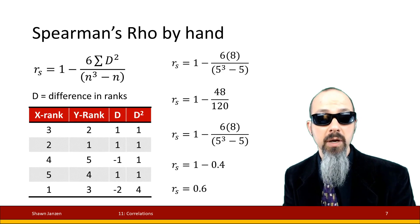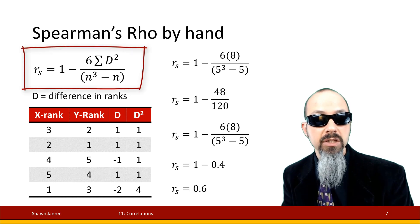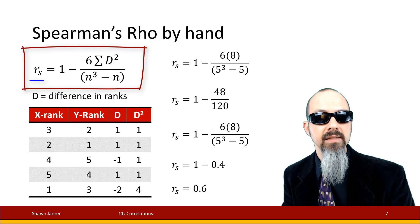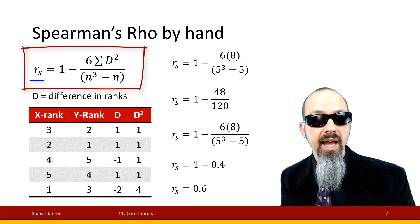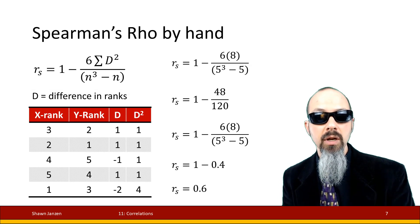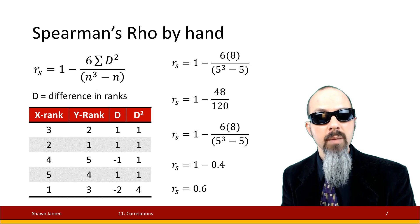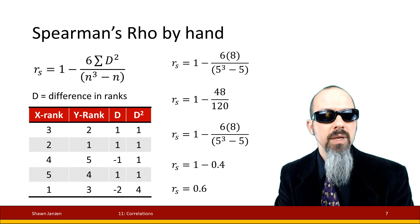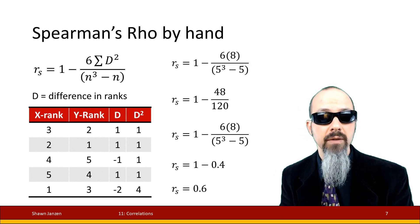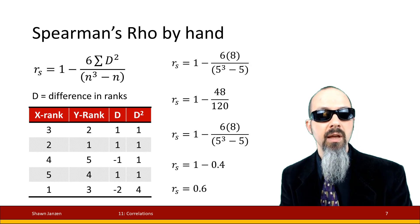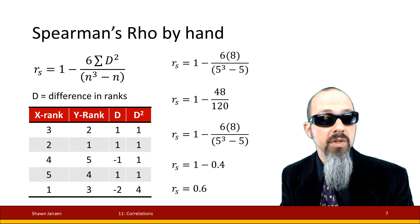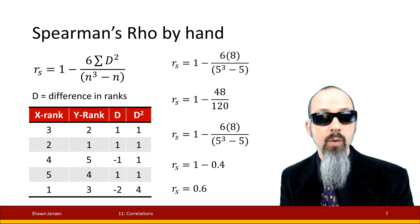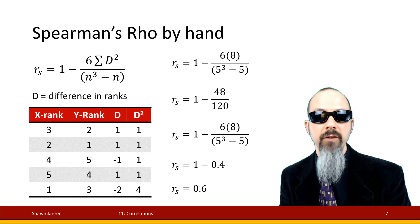Now let's figure out how to do the Spearman's Rho by hand. The formula for Spearman's Rho is written as R with a small s subscript, to denote the Spearman's version. You can also indicate it by the Greek lowercase rho, but sometimes that looks too much like a P and people might confuse it with p-value, so sometimes I prefer to use the R sub s version. That also makes a distinction between the population version, which gets the Greek letter, and the sample, which gets the Roman letter.